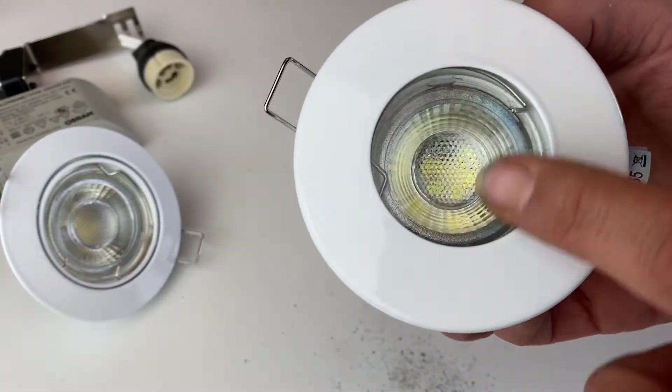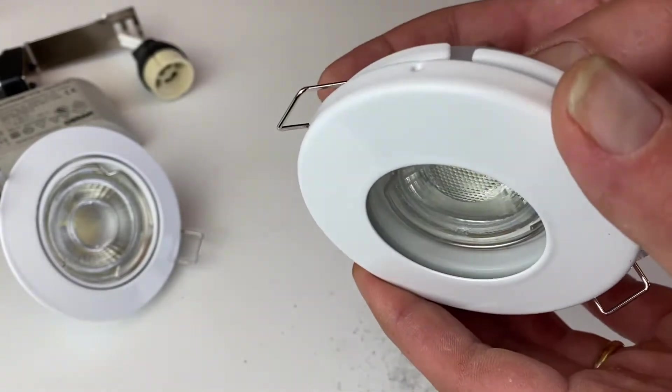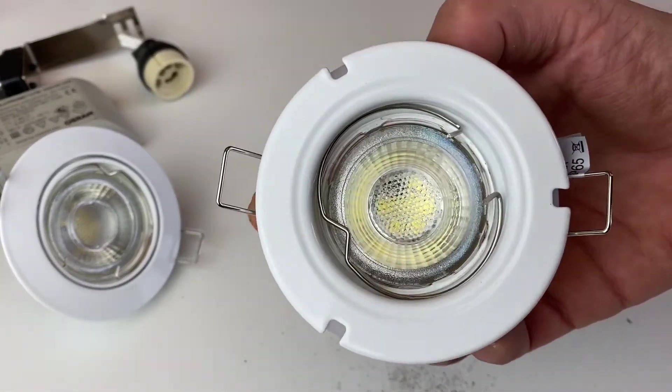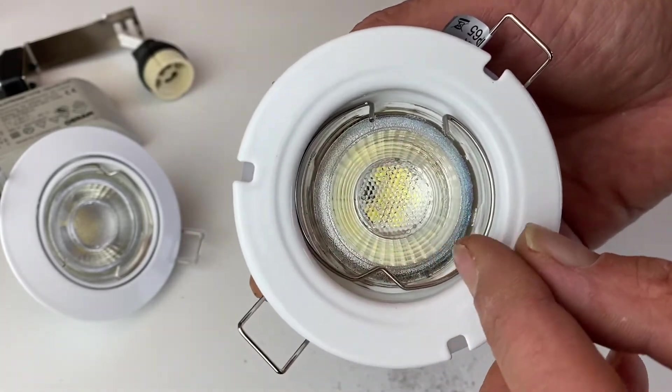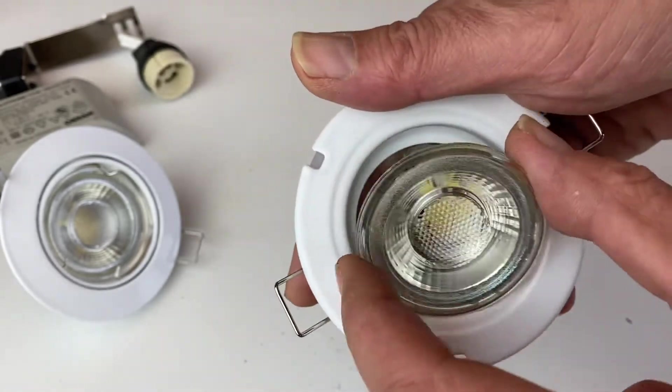For wet rooms you will see that there is this cover here, so you don't have directly access to the bulb. But it's the same principle. Once you have removed the cover, then you just open like this and your bulb is free.